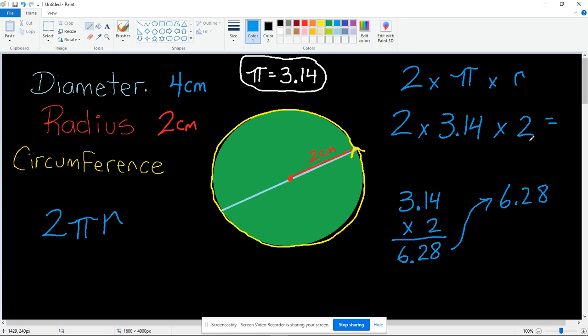Now you still have to multiply it by two. We haven't done that yet. Times two. Eight times two is 16. Two times two is four plus one is five. Six times two is 12. Two numbers after the decimal.